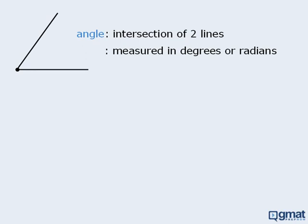The GMAT only requires you to know about degrees, so you don't need to worry about radians. This particular angle has a measurement of 55 degrees, which we can denote in several ways other than the one shown here.